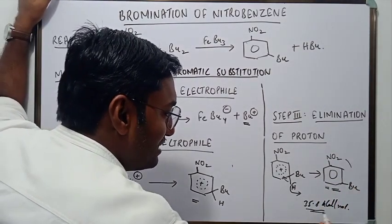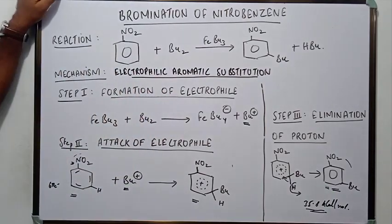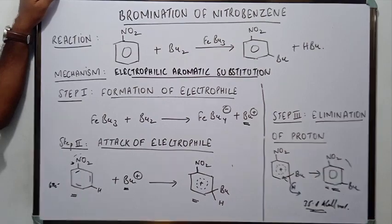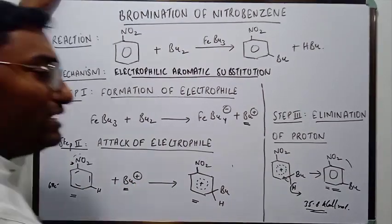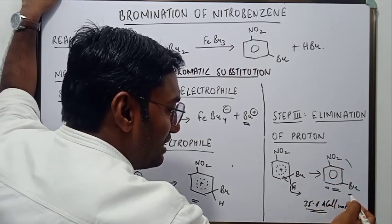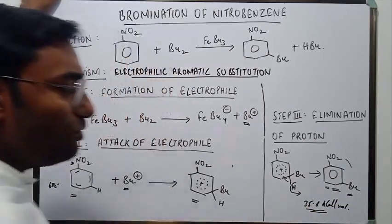Resonance stabilization reminding you that it is 35.8 kilocalorie per mole as compared to the hypothetical structure of cyclohexatriene. So that leads to a stable molecule. That is why metabromonitrobenzene is formed.